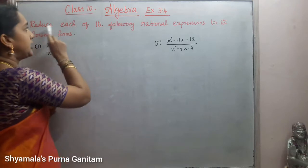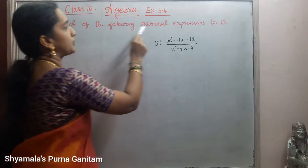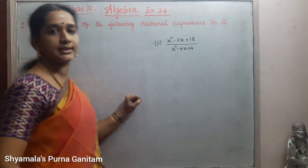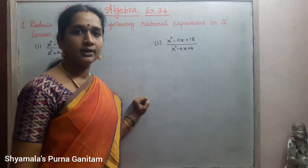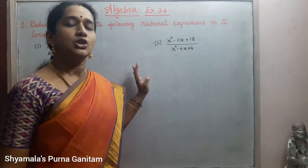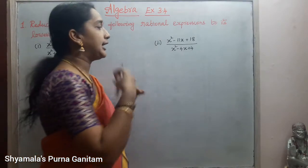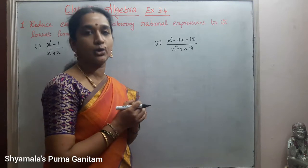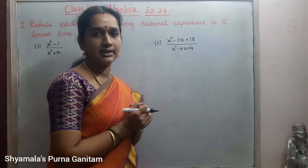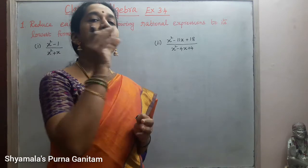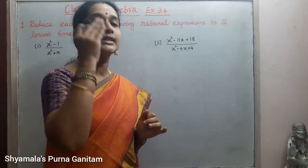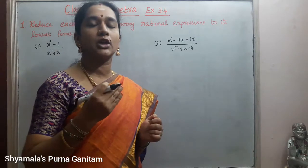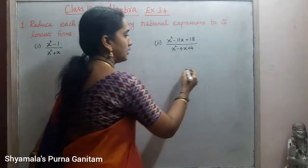First step: reduce each of the following rational expressions to its lowest form. So what is the meaning of this? When we take any two numbers, reducing it to the lowest terms means we will find the factors of those terms and whatever common possibilities are there, we will simplify that.